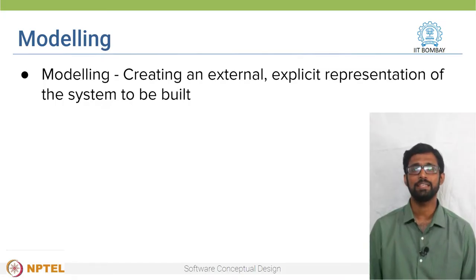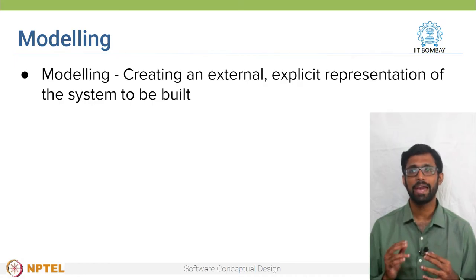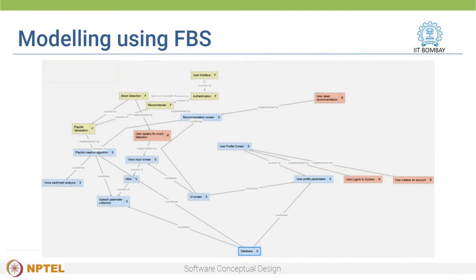Representations like the FBS graph and other diagrams represent the design communicated in different ways and methods. This process of representing the solution design is referred to as software modeling. Modeling is a way of creating an external, explicit representation of the system to be built. For example, the FBS graph is an external representation which describes the functions, structures, and behaviors of the system to be built, and provides an overview of the entire software solution.